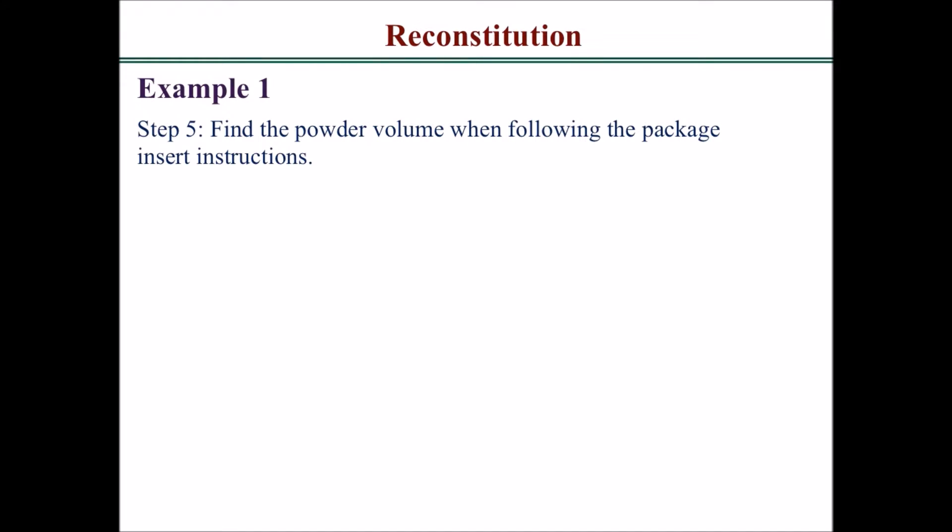Next, find the powder volume following the package insert instructions. 10 milliliters of suspension minus 7 milliliters of diluent gives you 3 milliliters of powder volume. The powder volume should not change.